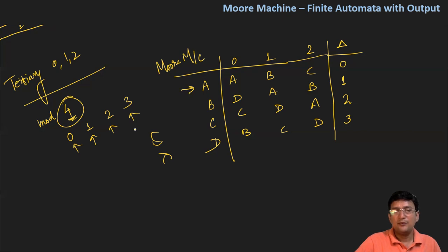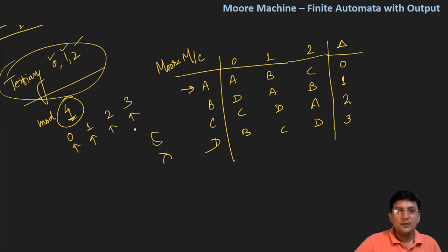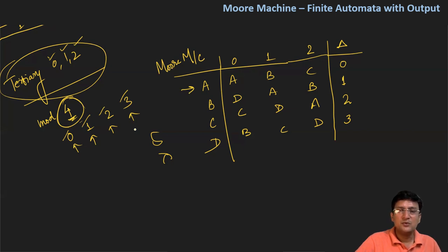This transition table for the Moore machine shows both the transition function and the output function. If you have already seen the lectures on DFA, you will have clarity about how to design the Moore machine for these kinds of problems. The input alphabets are 0, 1, 2 for the tertiary number, and since we take modulus four, the remainders can be 0, 1, 2, 3 — that's why there are four states ABCD. Similar questions will be covered in subsequent lectures for the Moore machine.